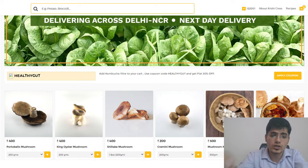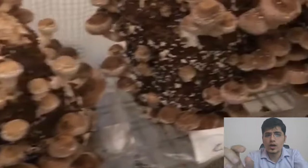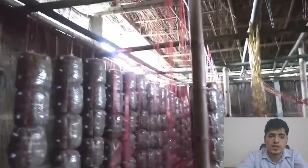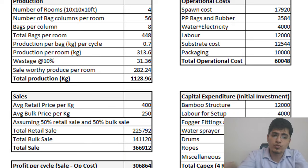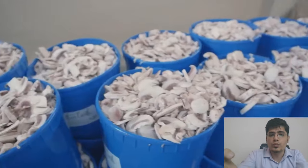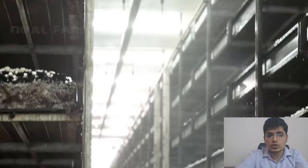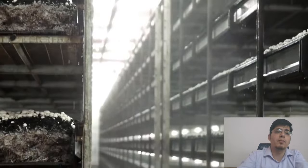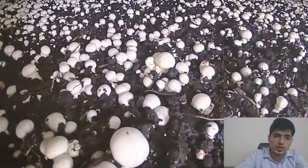You'll learn where mushrooms can be sold and at what prices. Then we'll go on to farm design — we'll design a farm, how it should look, how you should place the mushroom bags so as to get maximum space efficiency. For one example room, we'll calculate the basic profitability from unit economics to revenue, cost, profit, recurring costs, and initial investment — we'll discuss them all.